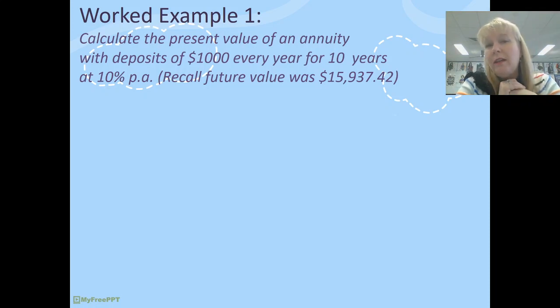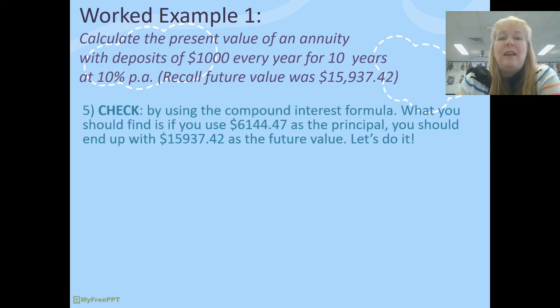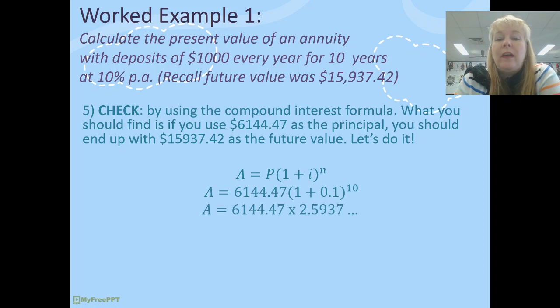The way that you can check is to use your original compound interest formula. Because technically speaking now, if I was to invest this $6,000 for 10 years at 10%, I should end up with the same future value as that annuity. So let's check that now. I'm going to substitute it into the formula. And I'm going to work that through. And I've come to $15,937.17. Now that's about 25 cents out. You might be asking yourself, why is that out? That should be exactly the same, shouldn't it, if I was to do this correctly?